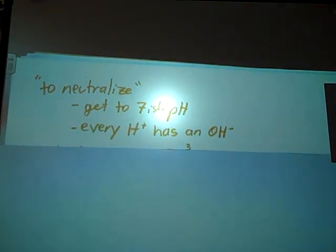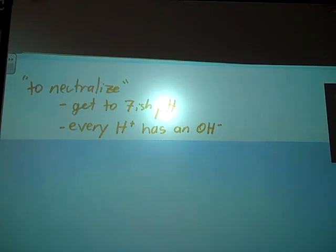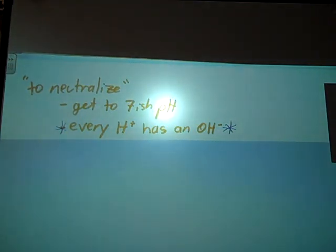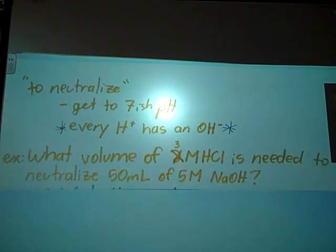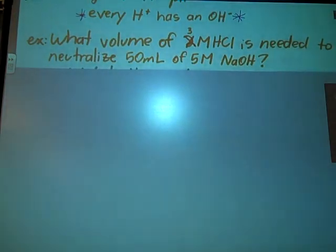Here's our first example. When we say to neutralize something, we're talking about getting it to a pH 7-ish. That is neutral. What you're trying to do in essence is make sure that every H-plus has an OH, every OH has an H-plus. All of those extraneous ions have been neutralized by finding one of the opposite. What volume of 3 molar hydrochloric acid is needed to neutralize 50 milliliters of 5 molar sodium hydroxide? This might come in handy if you're doing what's called a titration lab.